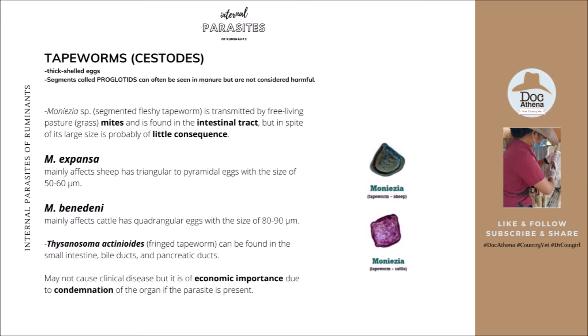The most common tapeworms are Monieza. They are segmented, fleshy tapeworms transmitted by free-living pasture grass mites and are found in the intestinal tract. Despite their large size, they are probably of little consequence. Two types of Monieza have been reported: Monieza expansa, which mainly affects sheep and has triangular to pyramidal eggs with a size of 50 to 60 micrometers; and Monieza benedini, which mainly affects cattle and has quadrangular eggs with a size of 80 to 90 micrometers.